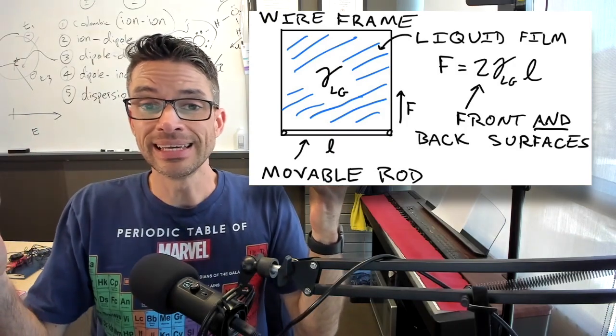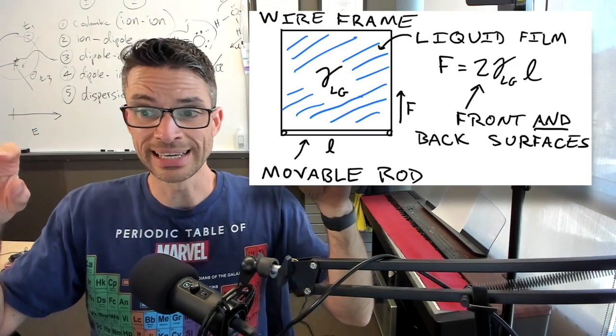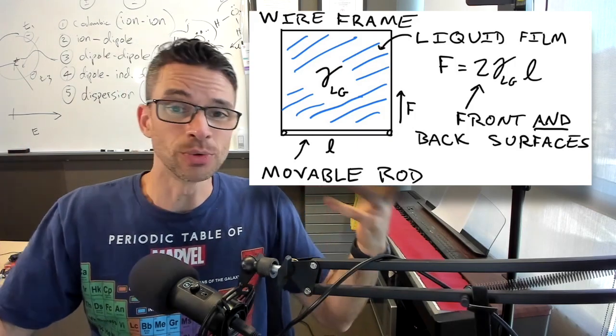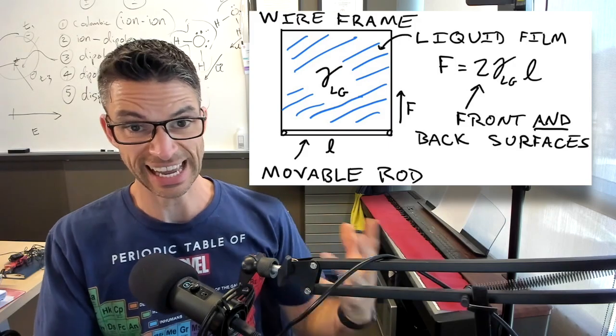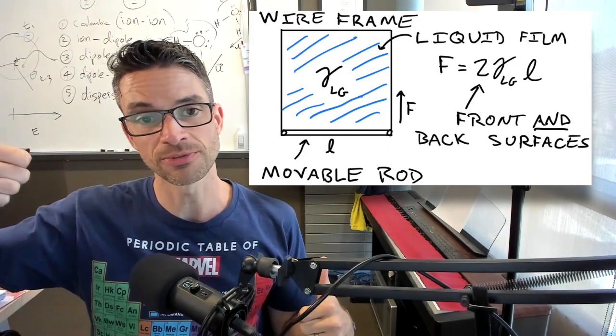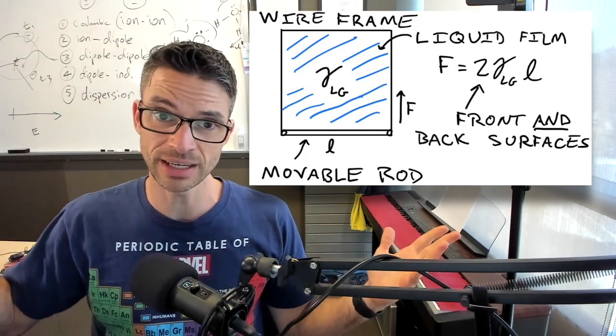And the rod will be at an equilibrium position if the downward force due to gravity, like mg, is matched by the upward force due to surface tension. That's how to think about surface tension.